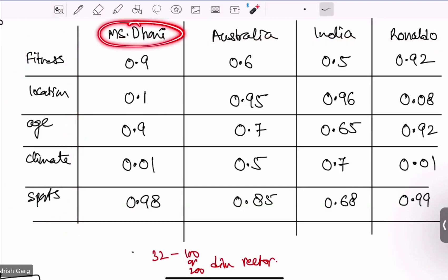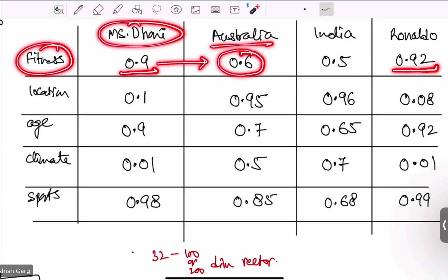For MS Dhoni, fitness level is very high. For Ronaldo, it is very high. And for Australia, as an entire country, it will be at least less than this particular sports person. And for India, let's say, because it is very large country having very large population, it will be maybe even lesser than Australia.